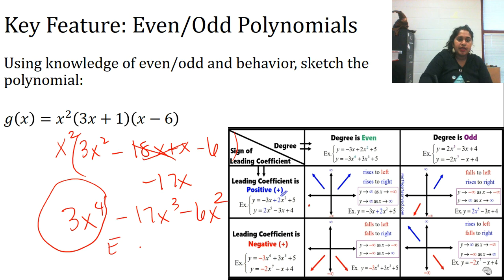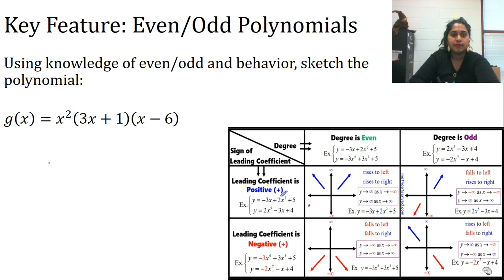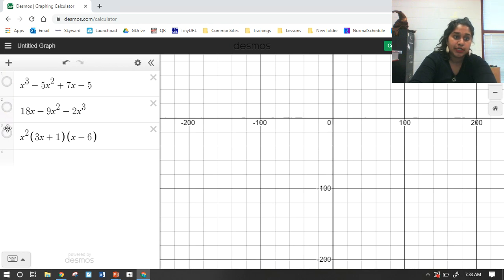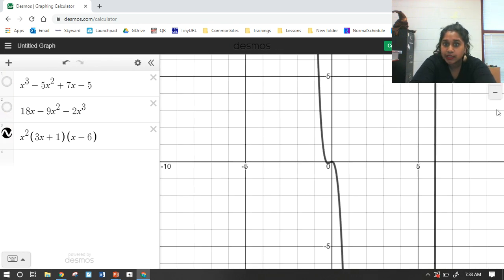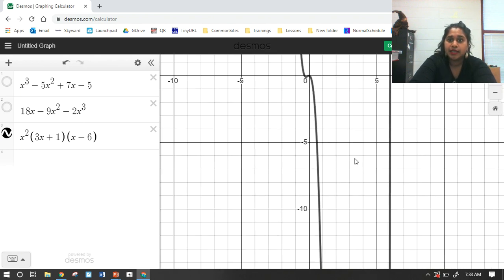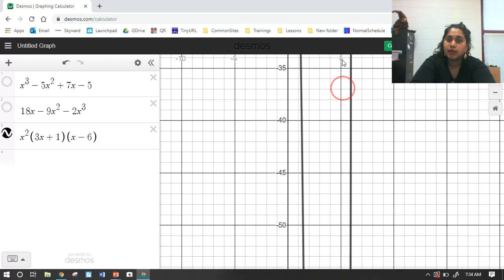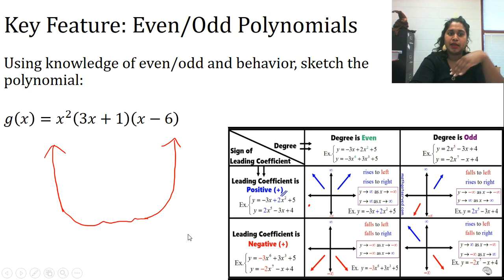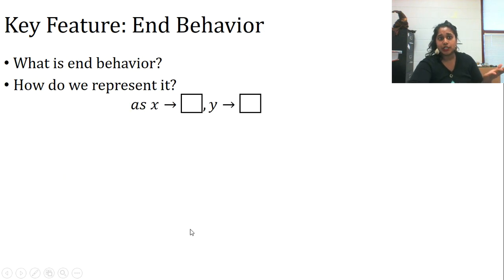The degree is even and positive, so it should go up on both ends. Drawing that: it kind of goes up, and because it's 4th degree rather than 2nd, there might be something funky in the center. Checking the graph: it goes from up to up with a minimum way down, and there was a little bit of funkiness in the middle. We got it correct.